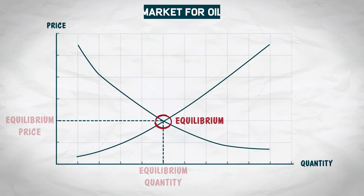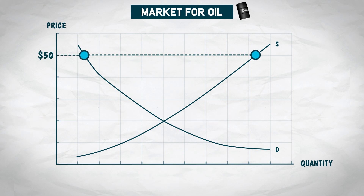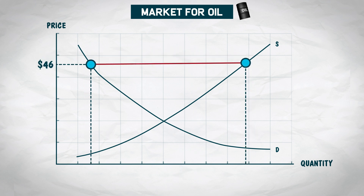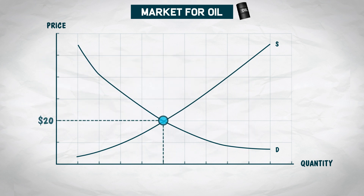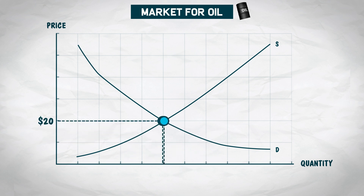We showed in an earlier video that at any price above the equilibrium price, there's a surplus, and the incentives of sellers pushes the price down. And at any price below the equilibrium price, there's a shortage, and the incentives of buyers pushes the price up. As a result, the equilibrium price is the only stable price.